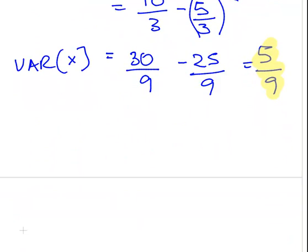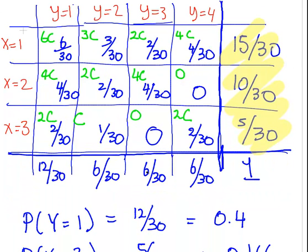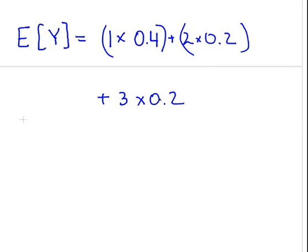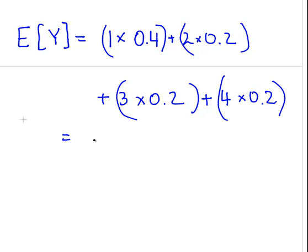The expected value of y: looking back at our marginal distribution of y, the probabilities are 12/30, 6/30, 6/30, and 6/30, with possible values 1, 2, 3, 4. So E(Y) = 1×0.4 + 2×0.2 + 3×0.2 + 4×0.2, which works out to 11/5, or 2.2.